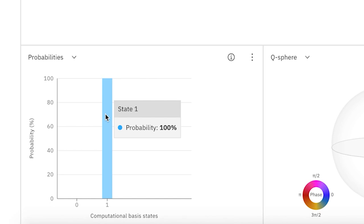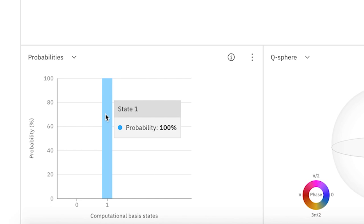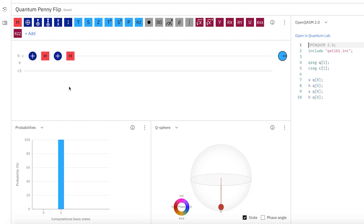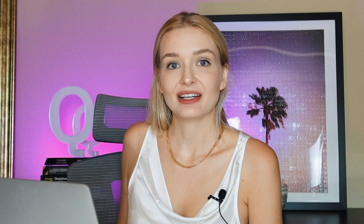And we see at the end the computational basis, the probability of being in state one is still 100%. So no matter what Bob does, whether he bit flips or does the identity gate, Alice will still win at the end. She'll always have the right answer at the end. The right answer means that she knows that the final answer will be the exact same as the initial state. So whether she starts with a zero or one, the last state will be a zero or one as long as she follows the Hadamard sequence here.